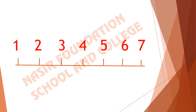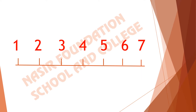What comes before 7? What is the previous number on the number line? We can see that the previous number is 6. So, before 7 we can say it comes 6. What is the previous number of 6? What comes before 6? On the number line we can see that 5 is placed before 6. So, we can say that before 6 it comes 5.